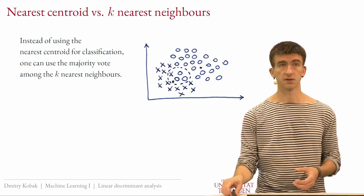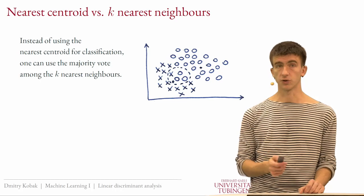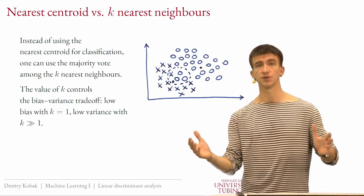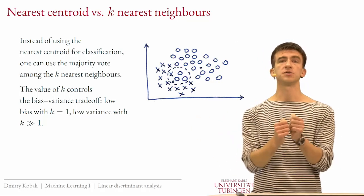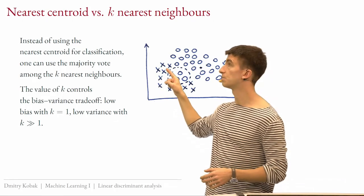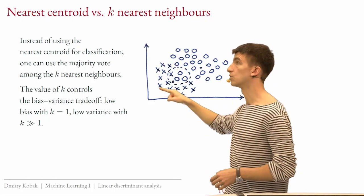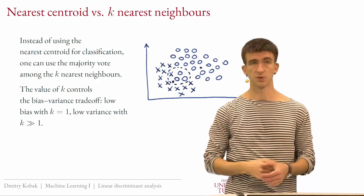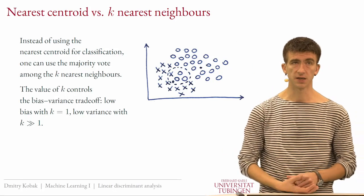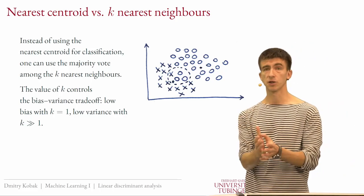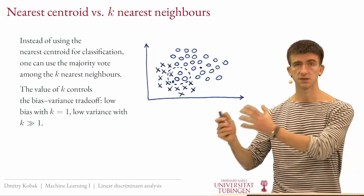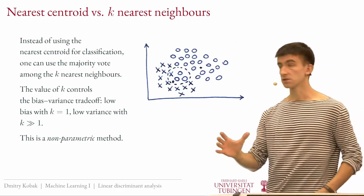KNN is super simple but can be super effective in many situations. The value of k controls the bias-variance tradeoff: k=1 is high variance — the decision boundary wraps tightly around each training point; large k is high bias. You can tune k by cross-validation or a test set. This is the first non-parametric method we encounter in this course.